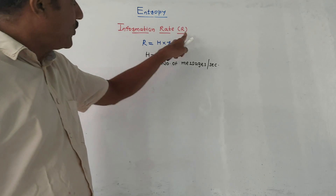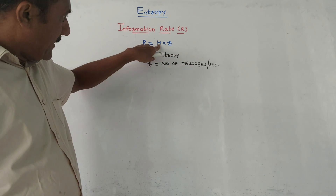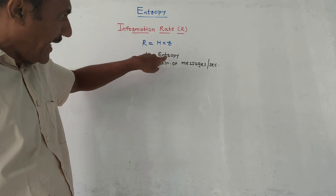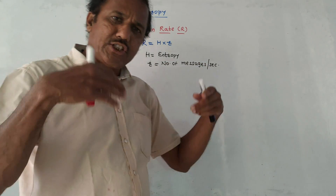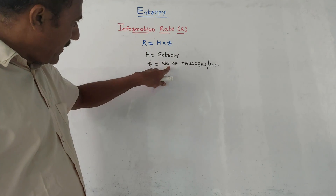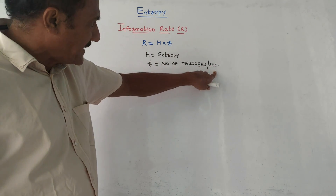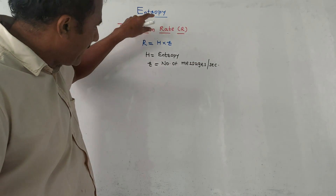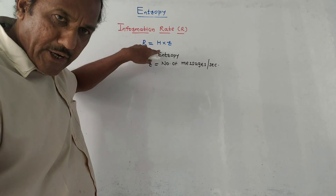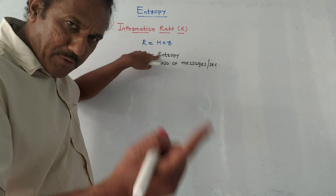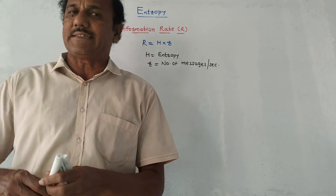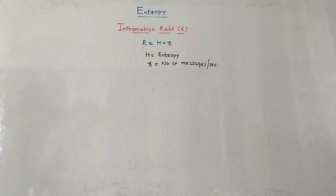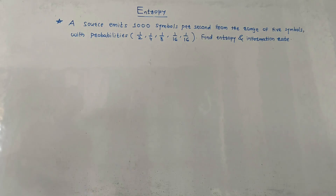A parameter related to entropy is information rate, denoted by capital R. R = H × r, where H is entropy (average information per message) and r is the number of messages per second. So information rate is the product of entropy and the number of messages per second.